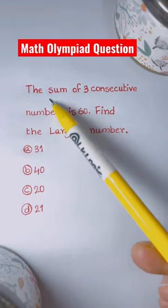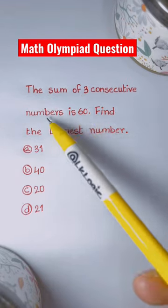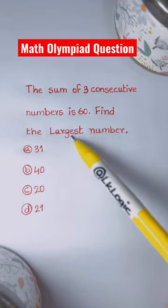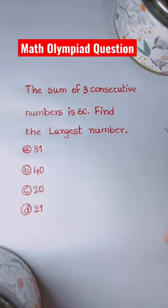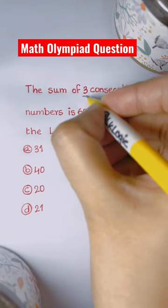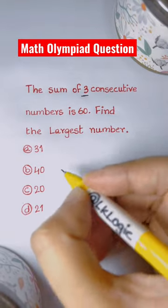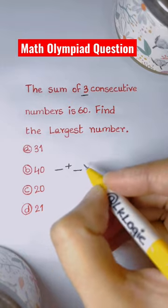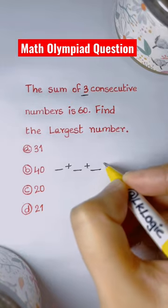The sum of three consecutive numbers is 60. Find the largest number. Let's write down what the three consecutive numbers would be, as we don't know what adds up and gives us 60.